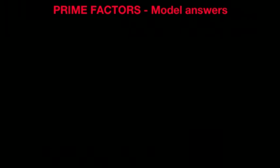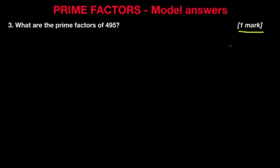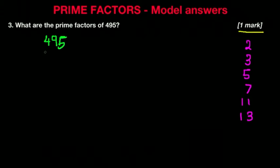Now let's move on to our third question: what are the prime factors of 495? This is typically a 1-mark question, though it could be a 2-mark question — if it is, make sure you show all the workings out. We're going to begin by writing our prime numbers: 2, 3, 5, 7, 11, and 13. So let's write down our number 495. Is 495 divisible by 2? No, because it's an odd number. Can we divide it by 3? Let's show some workings out: 495 divided by 3.